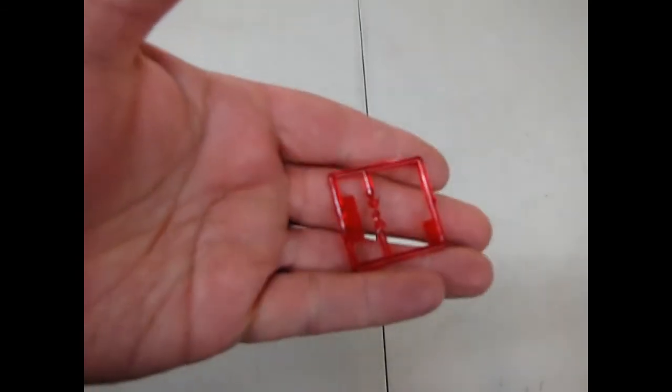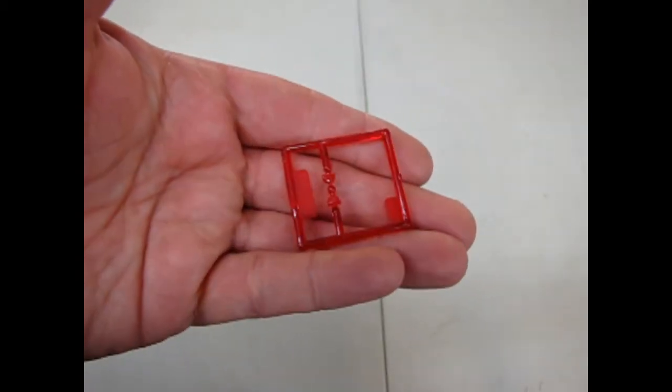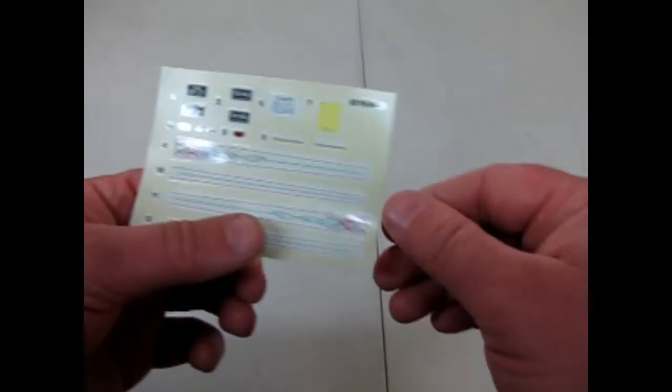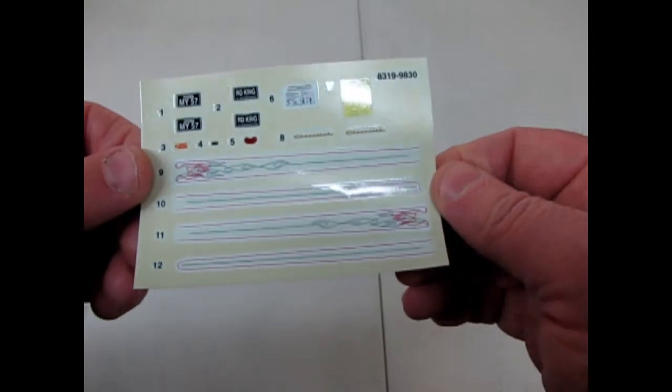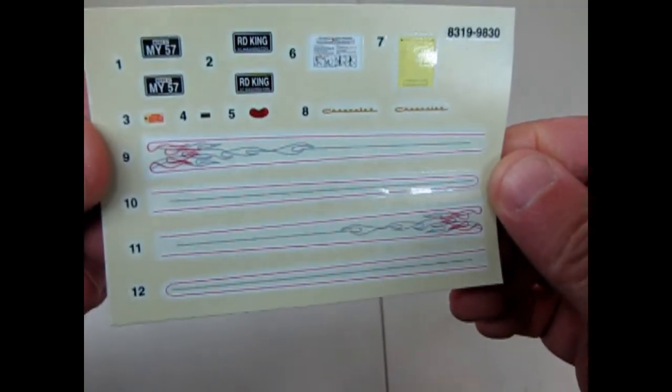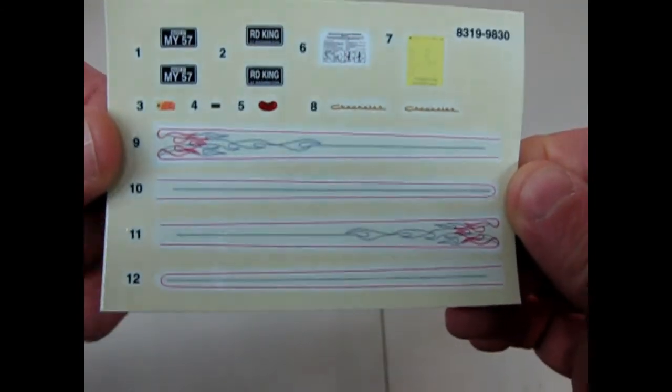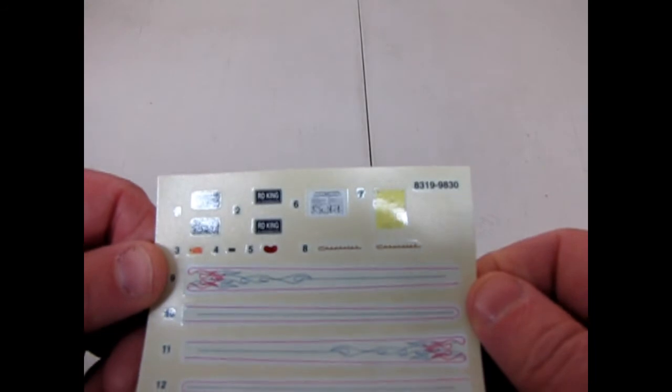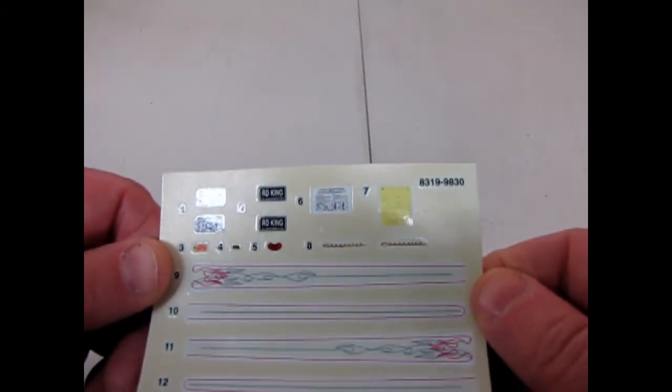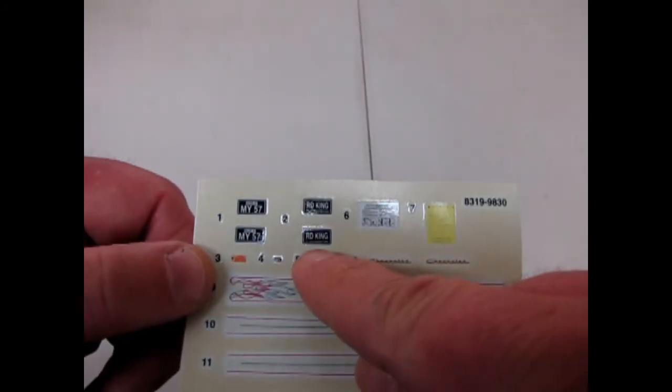And our red reflective tail light lenses. And last but not least, this is the decal sheet. This gives you these nice little pinstriped flames in these little frames, as well as some of the under hood stickers and details that would be common in the 57 Chevy. And there's a road king license plate and a plate that says my 57.